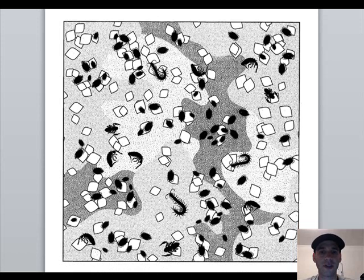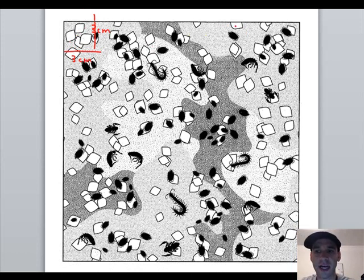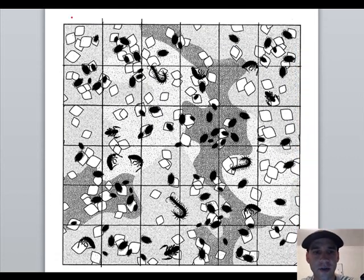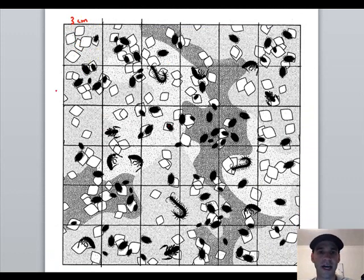For this exercise you're going to use what we call quadrats. The first thing you'll do is mark out every 3 centimeters and create a grid. So boxes that are 3 centimeters by 3 centimeters, and when I finish that I'll have 36 different boxes. This is going to allow me to divide up and sample just a couple of these boxes and use that to represent the whole sample.